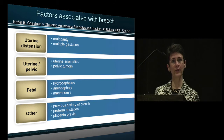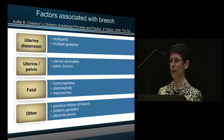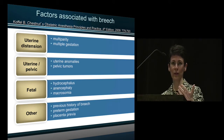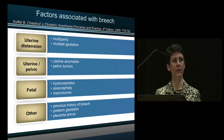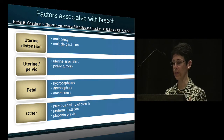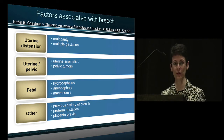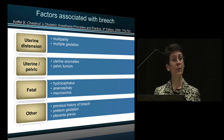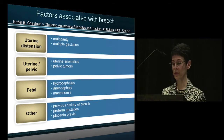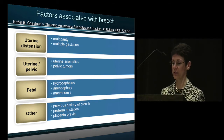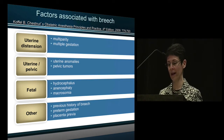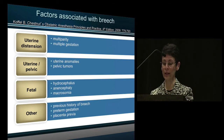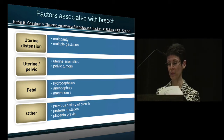Several factors can contribute to breech presentation, some maternal and some fetal. Maternal factors include uterine distension as seen with multiparity or multiple gestation, fibroids or pelvic tumors, and uterine abnormalities. Fetal factors include hydrocephalus, anencephaly, and macrosomia. Other contributing factors include preterm gestation and placenta previa.